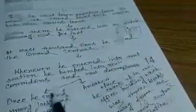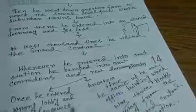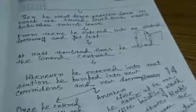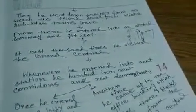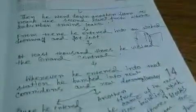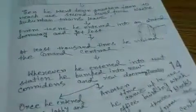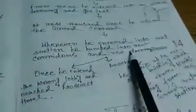He thought at least a thousand times he visited the Grand Central. But whenever he entered into that station, he bumped into new corridors and new doors. It's not that there are only two levels. Everybody can see the two levels of the Grand Central. And when he entered, he only can see that there is one more level and that is the third level. Whenever he entered into Grand Central station, he looked something new, some new corridors, some new doorways. And through those ways, if he walked, he could find the third level.